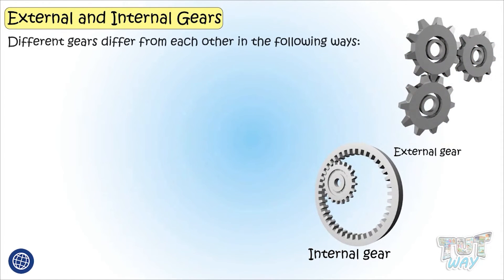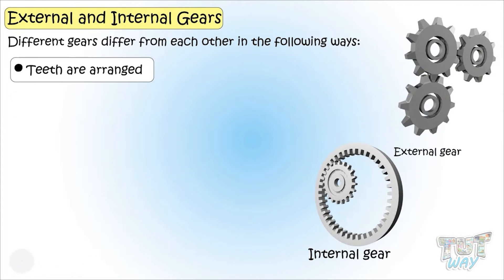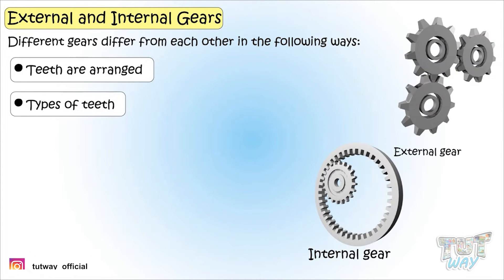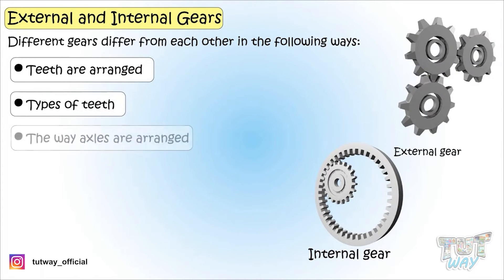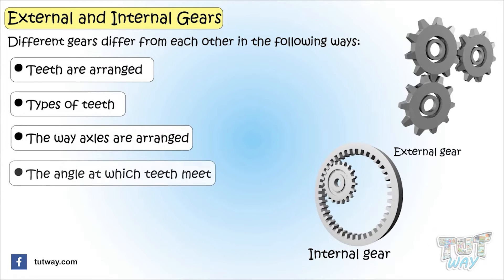Different gears differ from each other in the way teeth are arranged, their types of teeth, the way axles are put together, and the angle at which teeth meet. Now let's learn each type of gear one by one.